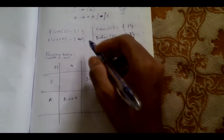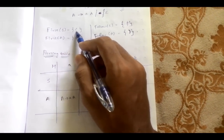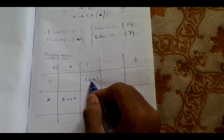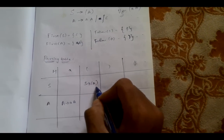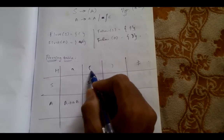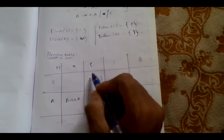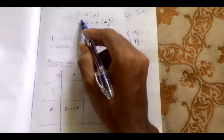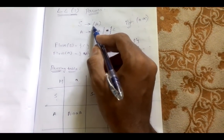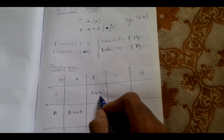First we will look at the first of S. First of S has opening bracket, so in the opening bracket column we need to place the production which generates this terminal. There is only one production for S, and this production is generating an open bracket, so we are writing S → open bracket A close bracket.